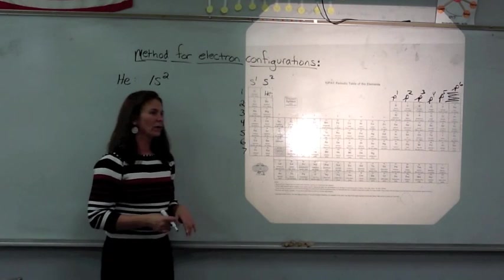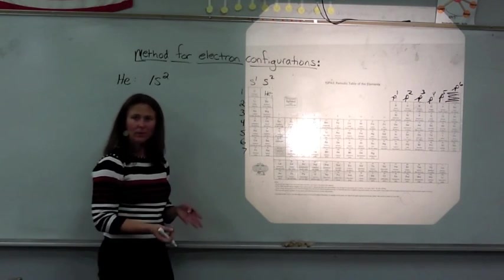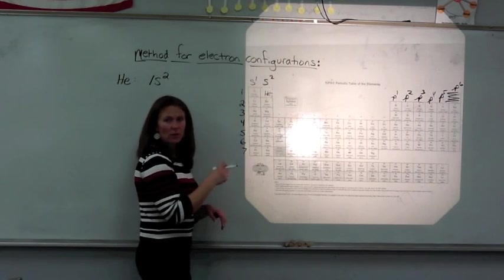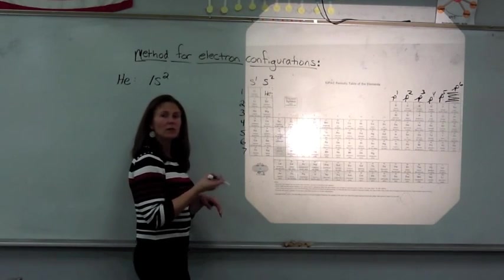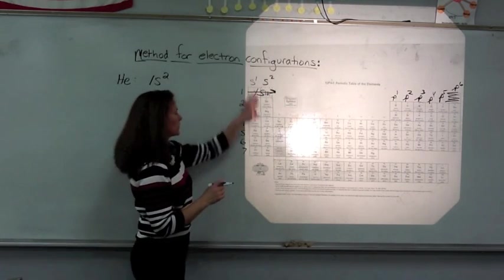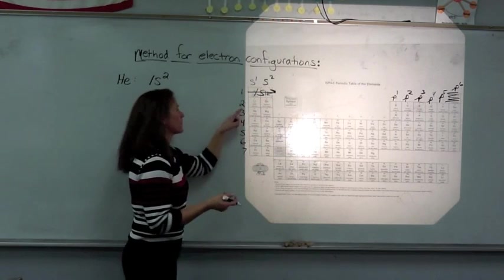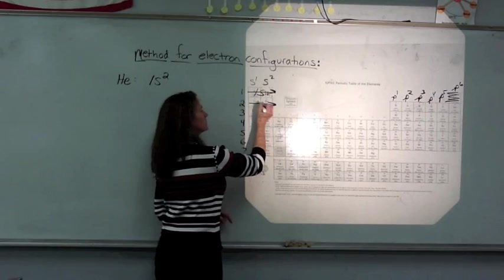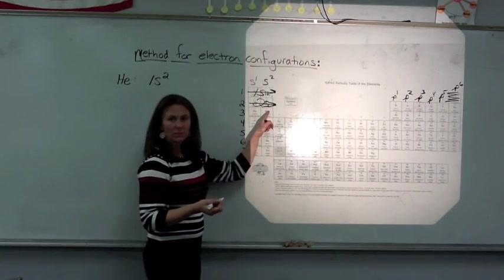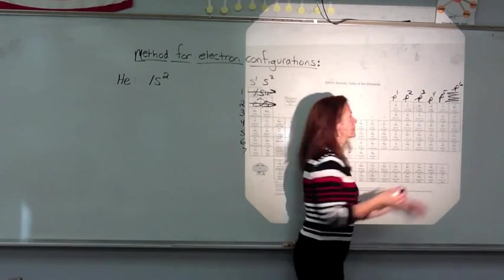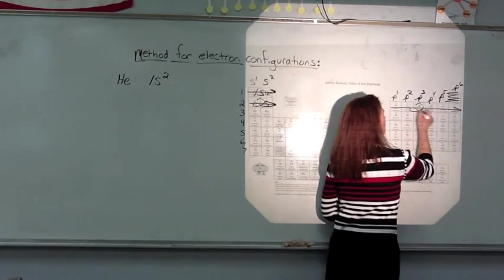First of all, just to take a look at a shorthand method of reading the periodic chart from left to right. This is the energy level, the principal quantum number, the energy level currently being filled by those elements. So they are filling the 1s, s block, first period. These elements are filling the second energy level and the s sub-level. These elements are in the second period and they're filling their p sub-level. So this is the 2p.